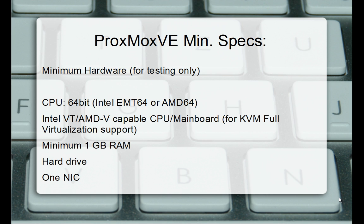Using Proxmox VE, the minimum hardware specs according to their website are a 64-bit Intel or AMD processor — you cannot use a 32-bit for a virtual server. They want you to have an Intel VT or AMD-V capable CPU or motherboard for full KVM virtualization support. I don't have that on my old 64-bit box, so it won't have all the bells and whistles of full KVM virtualization, but it is manageable. You can set up multiple virtual machines, and all administration is done via a web interface — creating VMs, locating hardware — all right in a web interface.